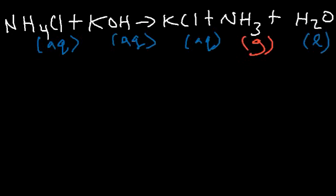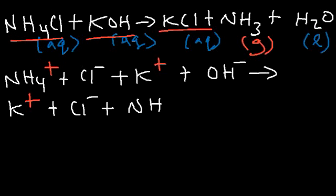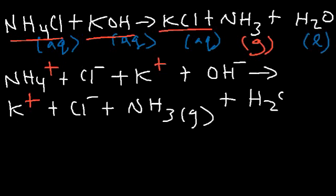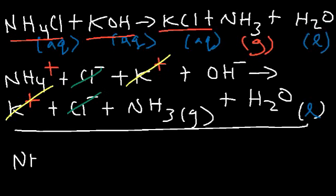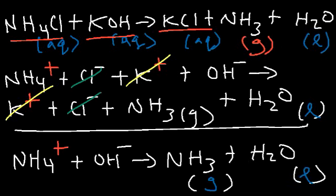For the net ionic equation of the ammonium chloride and KOH reaction: separate aqueous compounds into ions — NH₄⁺, Cl⁻, K⁺, and OH⁻ on the left; K⁺, Cl⁻ on the right, along with NH₃ gas and liquid water. Spectator ions are potassium and chloride. The net ionic equation is NH₄⁺(aq) + OH⁻(aq) → NH₃(g) + H₂O(l).